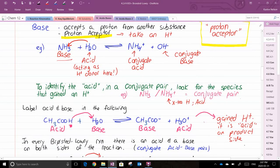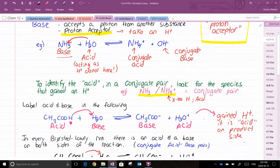To identify the acid in the conjugate acid base pair, you're going to look for the species that gained an H. So in this case, our conjugate acid base pair is NH3, NH4+. The NH4+ has the extra H, so we will call it the conjugate acid. And NH3 will be the base.